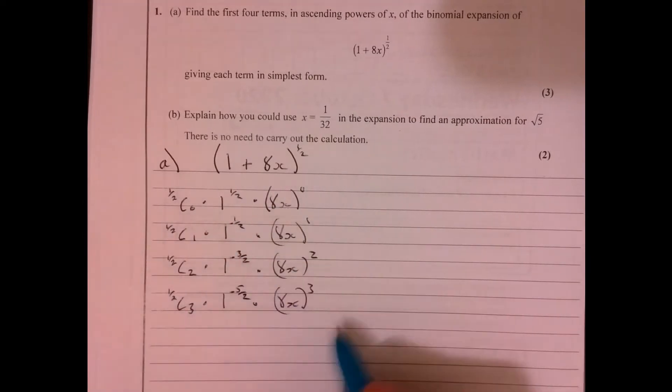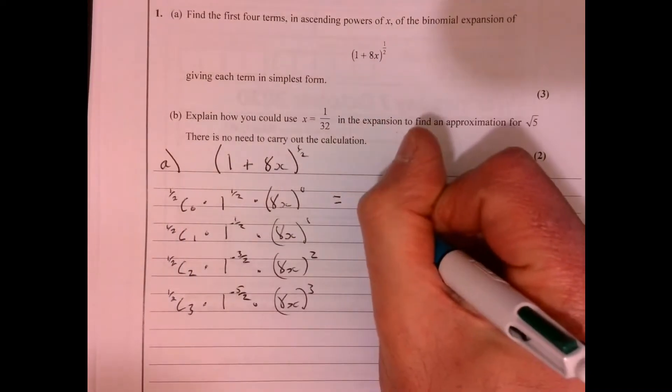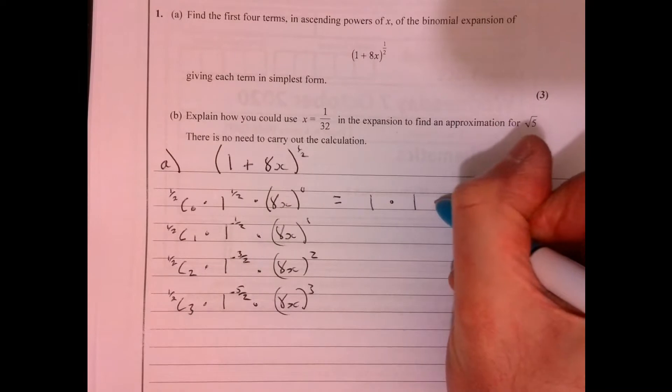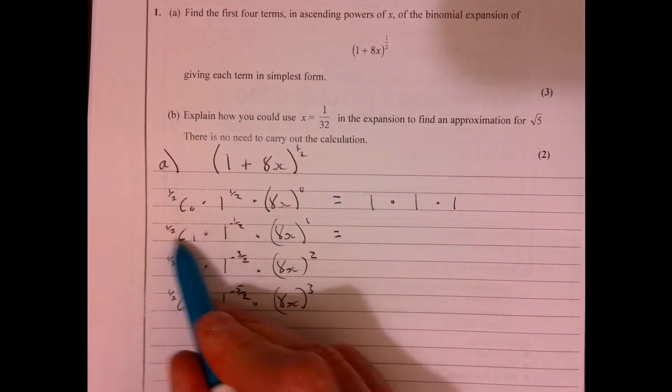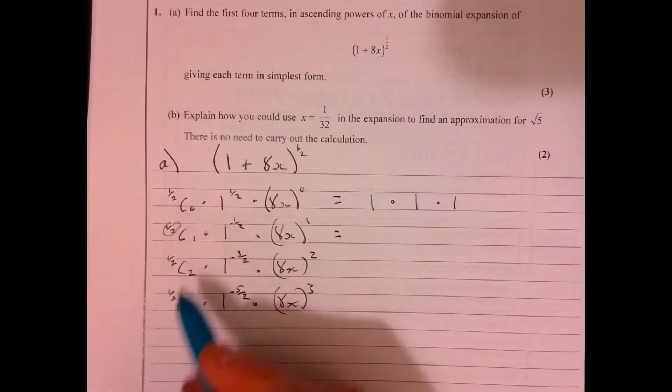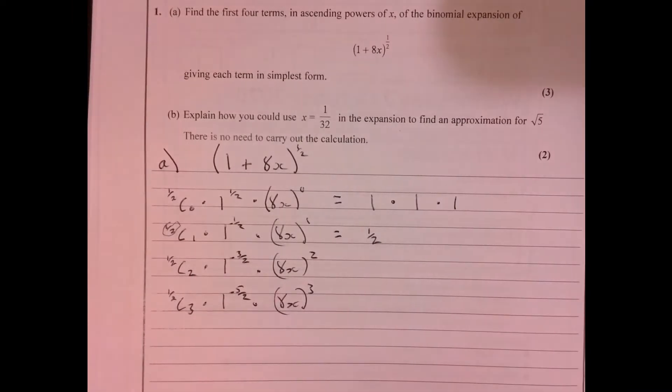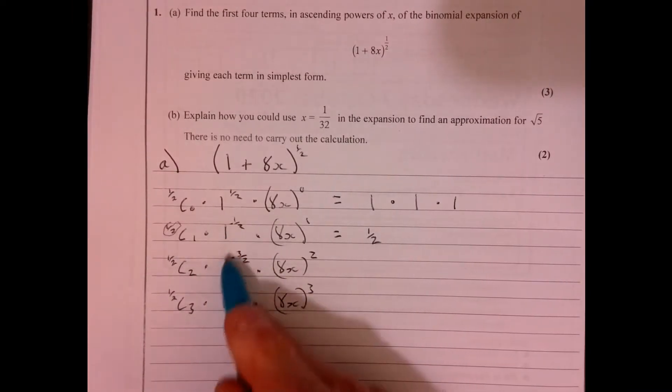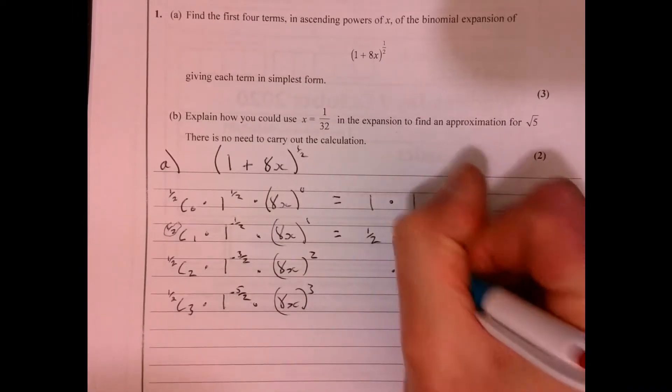Now think about what actually happens to each one. Well, anything C0 is going to be 1. Square root of 1 is 1. And anything to the power of 0 is 1. So just work out all the stuff that you can do without really thinking about it. Half C1. Well, anything C1 is going to be this bit here. If you're not sure, do 5C1 or something, and you'll see that the answer is 5. So that's going to be a half. Now, if I look at all of this column, 1 to the minus 1 half, 1 to the minus 3 over 2, 1 to the minus 5 over 2, they're all going to be 1. I'm just going to fill those in. If you're not sure, just check them on your calculator.